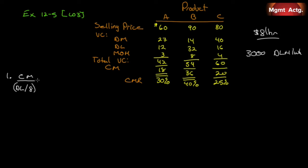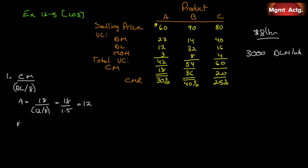If the rate is eight dollars per hour, product A must take one and a half hours. Product A has a contribution margin of eighteen dollars and direct labor costs of twelve dollars. Twelve divided by eight gives us one and a half direct labor hours. Eighteen divided by one point five is twelve — so product A generates twelve dollars of contribution margin per hour worked.